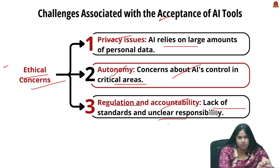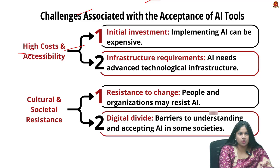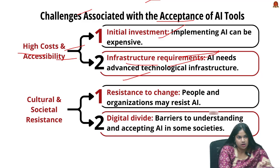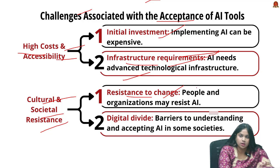When AI systems make mistakes or cause harm, it is often unclear who is responsible, leading to legal and ethical dilemmas. Next is the high cost and accessibility — AI tools can be expensive, making it difficult for small businesses and developing countries to adopt them. AI also needs advanced technological infrastructure, which may not be available in all regions, leading to unequal benefits.